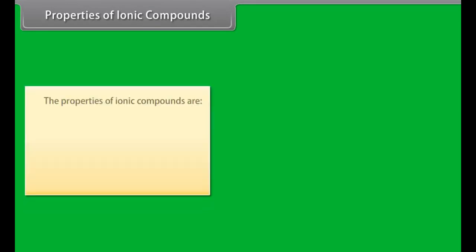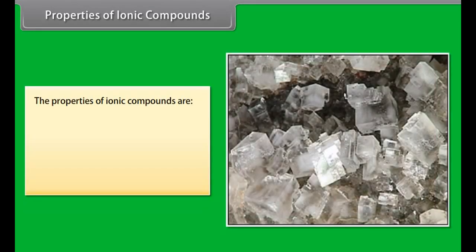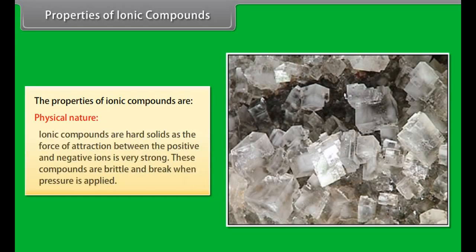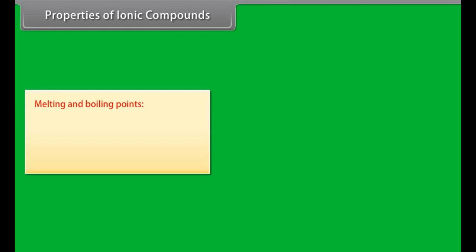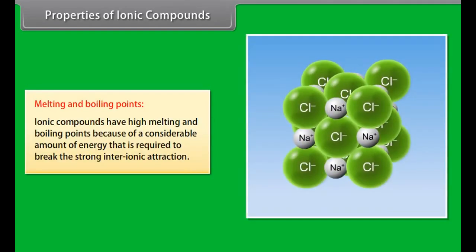Properties of ionic compounds. Let us look at some ionic compound properties. Physical nature: Ionic compounds are hard solids as the force of attraction between the positive and negative ions is very strong. These compounds are brittle and break when pressure is applied. Melting and boiling points: Ionic compounds have high melting and boiling points because of a considerable amount of energy that is required to break this strong inter-ionic attraction.